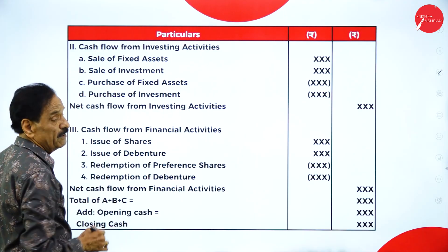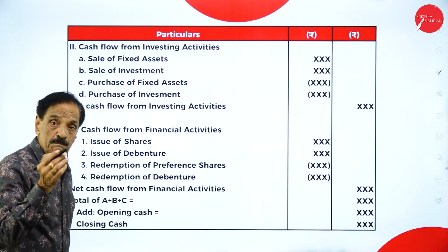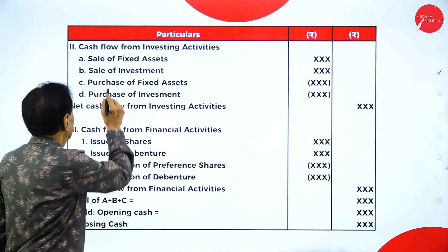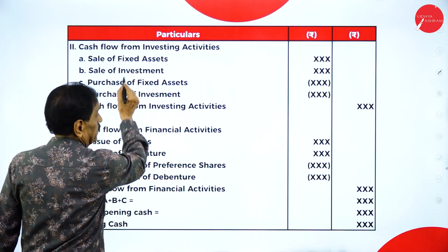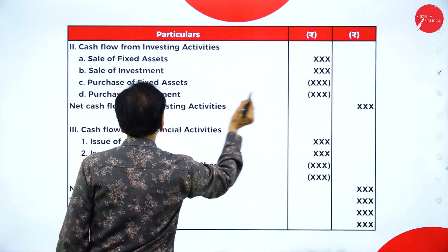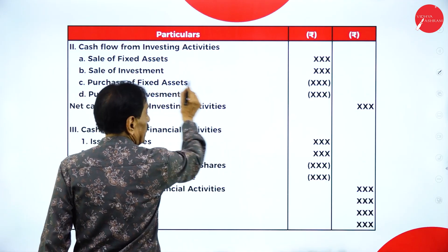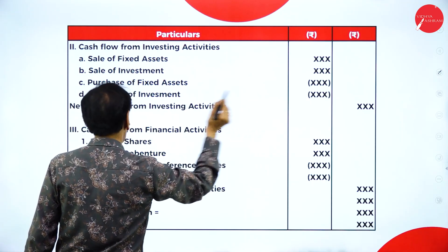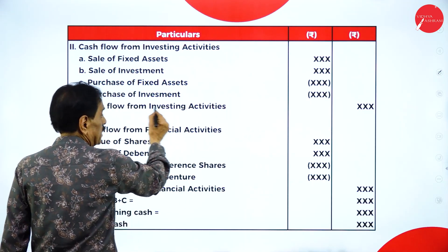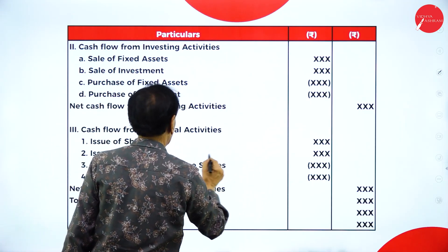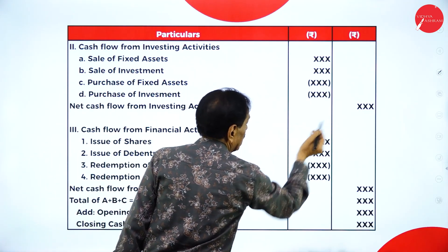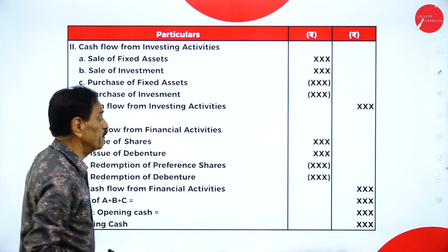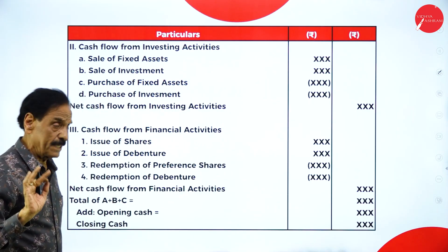Cash flow from investing activity: purchase is outflow, sale is inflow. Sale of fixed asset — inflow. Sale of investment — inflow. Purchase of fixed asset — outflow. Purchase of investment — outflow. Whatever difference comes is called net cash flow from investing activity.